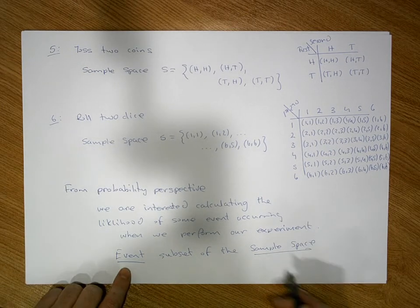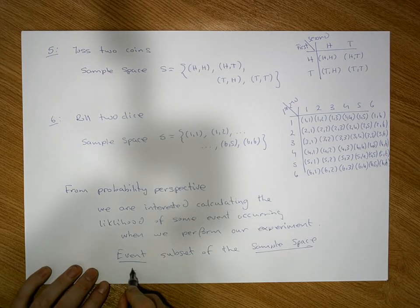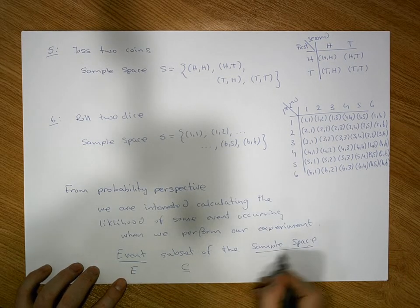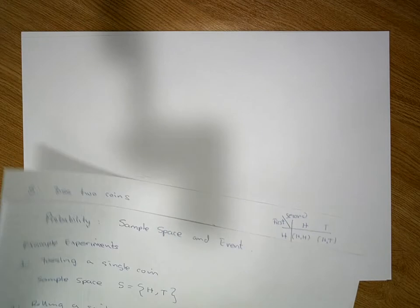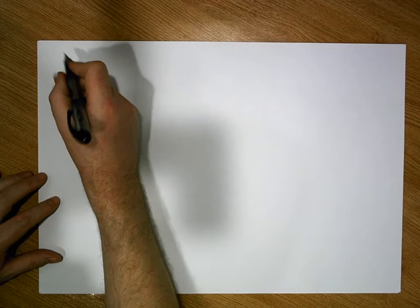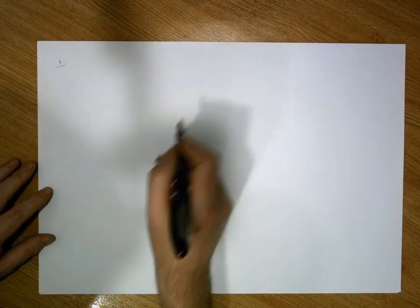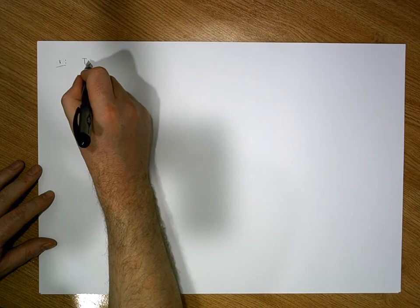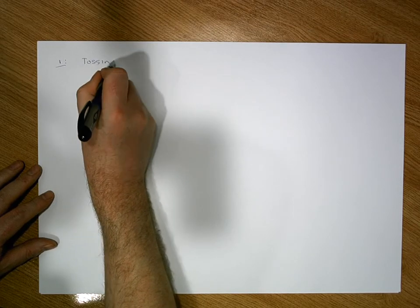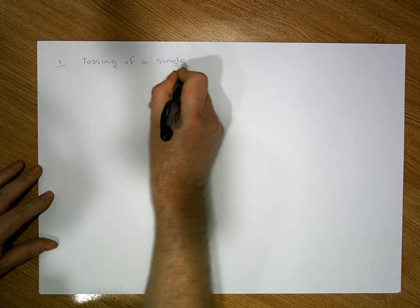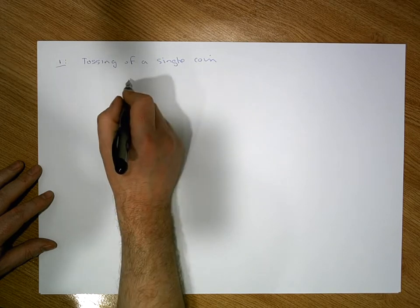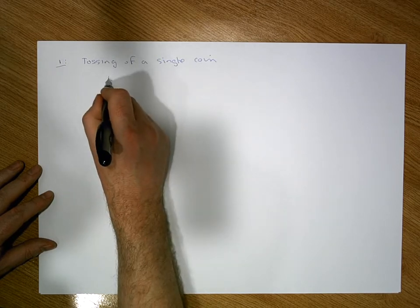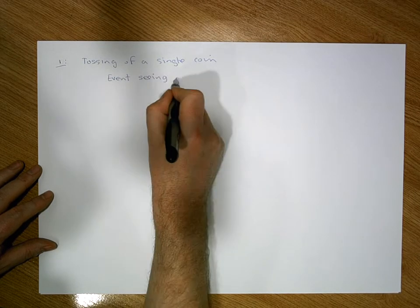We could symbolise that as: event E is a subset of the sample space S. For example, from a coin toss experiment, I might be interested in calculating the probability of tossing a single coin. The event I'm interested in is getting a head — so the event is seeing a head on the coin.